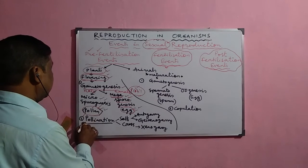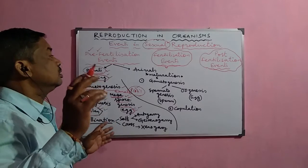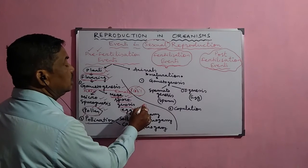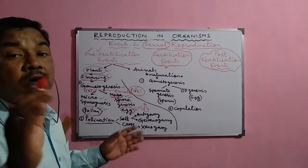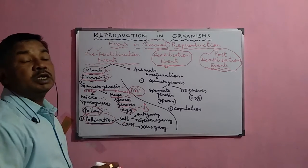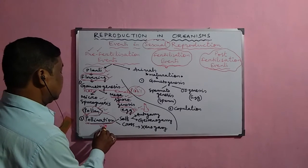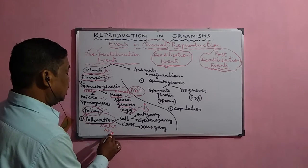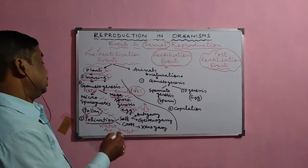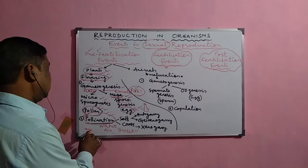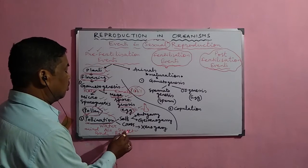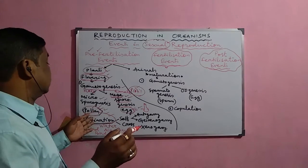After formation of pollen grains in the stamen and egg cells in the pistil, the next important event is the transfer of pollen grains from the anther to the stigma — this process is called pollination. Pollination occurs through different agencies: it may be water (hydrophilous flowers), air, or insects (entomophilous flowers). Sometimes birds and even bats visit from one flower to another, helping in the process of pollination.